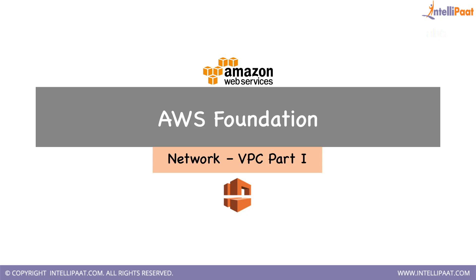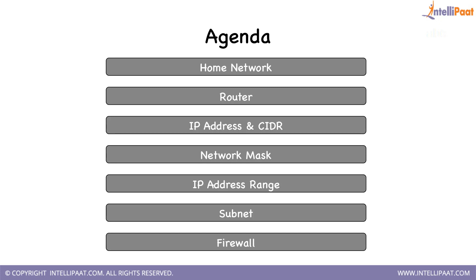Hello everyone, welcome back. We'll be discussing VPC — Virtual Private Cloud — in this topic. This is one of the most important and critical components in the AWS ecosystem. Please make sure to understand whatever I discuss here and ask me questions if you're not clear. Our agenda: we'll talk a little bit about how home networks work, then routers, and take deep dives into IP addresses, CIDR blocks, network masking, IP address ranges, subnets, and firewalls.